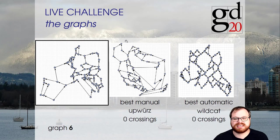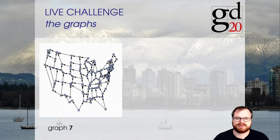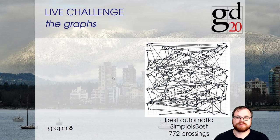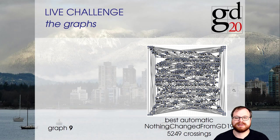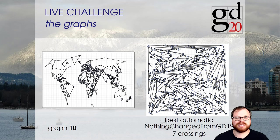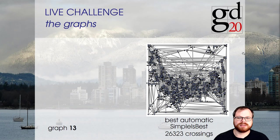For graph 7, the first one only available to the automatic category, we had a map of the US. There was a small blunder because we already gave this as an input to the users, so submitting the input drawing already gave zero crossings. Some teams still solved it differently — team Simple is Best had zero crossings but a very different-looking drawing. For the remaining graphs I'll just show the best solutions received, including maps of the Earth. This is the best solution for graphs 11, 12, and 13.